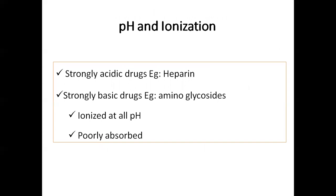Next is pH and ionization. Ionized compounds have poor absorption; this is a core concept. Unionized drugs have the highest absorption. Strongly acidic drugs like heparin and strongly basic drugs like aminoglycosides are ionized at any pH and therefore have poor absorption.